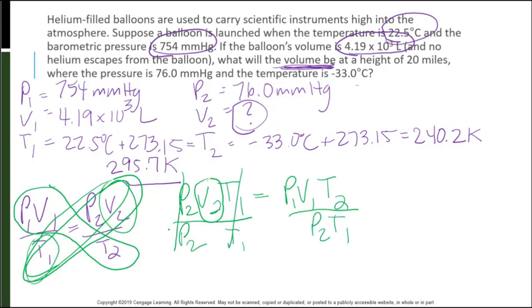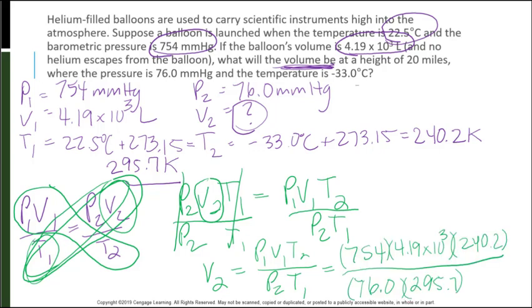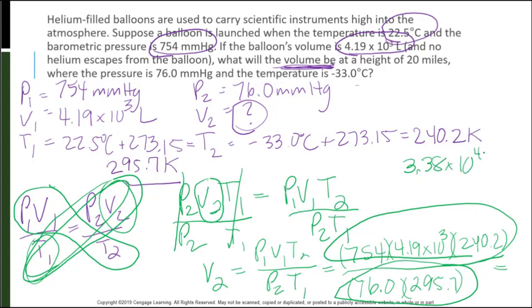Now we can put in the V2 is P1, V1, T2 over P2 times T1. And we know all of those variables. Let's plug it in. There we go. I've got all of my numbers plugged in. So let's do the total top divided by total bottom. And we should get, my calculator is spitting out to me with three significant figures, 3.38 times 10 to the fourth liters.